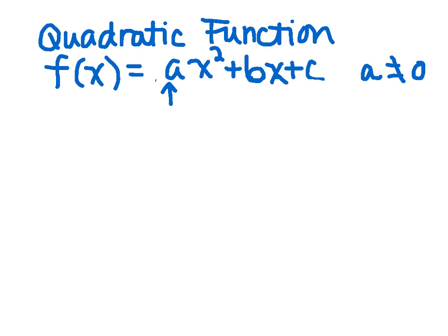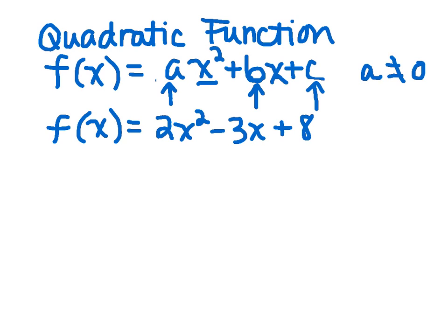So quadratic functions are in the form of ax squared plus bx plus c, a is not equal to 0, where a is the coefficient of what is called the quadratic term, the term that is squared. And b is the coefficient of the linear term. And c is a constant. The first thing we're going to do is just practice identifying a, b, and c. For example, f(x) equals 2x squared minus 3x plus 8. As you can see, 2 is the coefficient of the quadratic term. So a equals 2, b equals negative 3, and c equals 8.